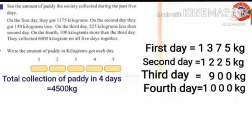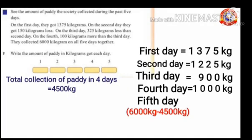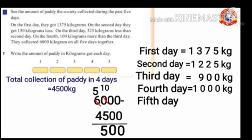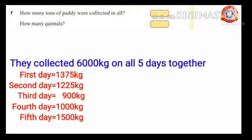To find out this, subtract 4500 kilograms from 6000 kilograms. 6000 minus 4500: 0 minus 0 is 0, 0 minus 0 is 0. We can't subtract 5 from 0, so borrow 1 from 6 — 0 becomes 10, 6 becomes 5. 10 minus 5 is 5, 5 minus 4 is 1. Collection of paddy on the fifth day equals 1500 kilograms.